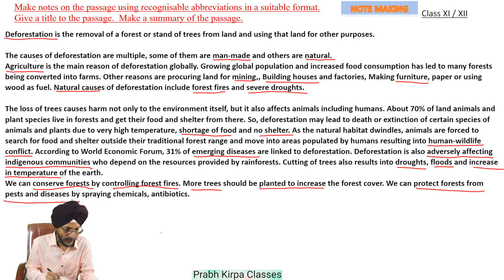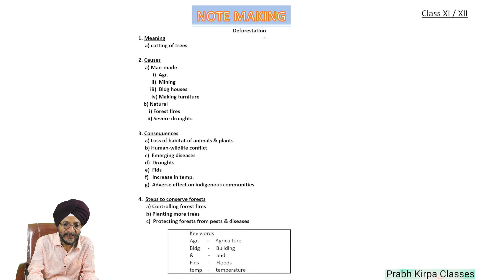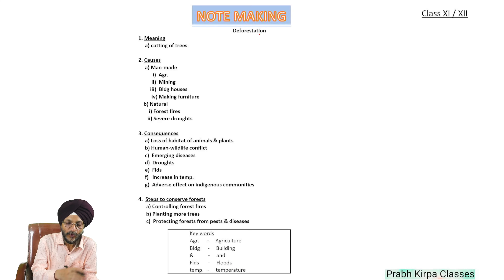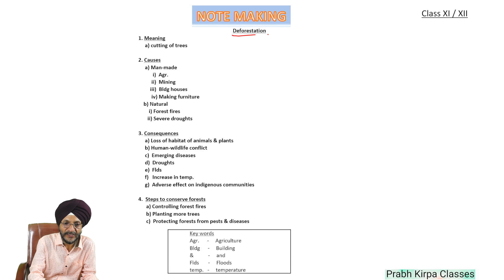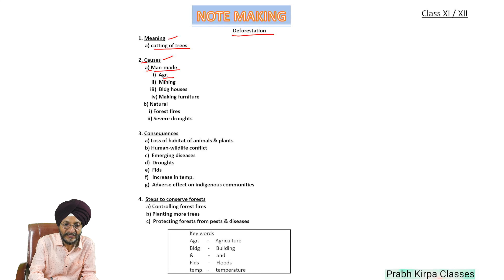You can see the note-making format we have designed from the previous passage. As already told, first comes the title. We write the meaning — meaning is given as 'cutting of trees'. These are the causes; we have first mentioned manmade. This is the heading, this is the subheading, and these are sub-subheadings.